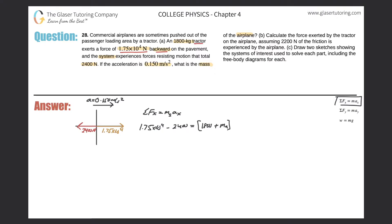So what are the forces in the x direction? It's 1.75 times 10 to the fourth minus 2,400, which will equal the mass of the system. The system consists of the tractor and the airplane. The mass of the tractor is 1,800. The mass of the airplane is what we're solving for. Then we multiply by the acceleration — the whole system experiences 0.150 acceleration. So 1.75 times 10 to the fourth minus 2,400 gives us 15,100, which equals 1,800 plus M_airplane, all multiplied by 0.150.